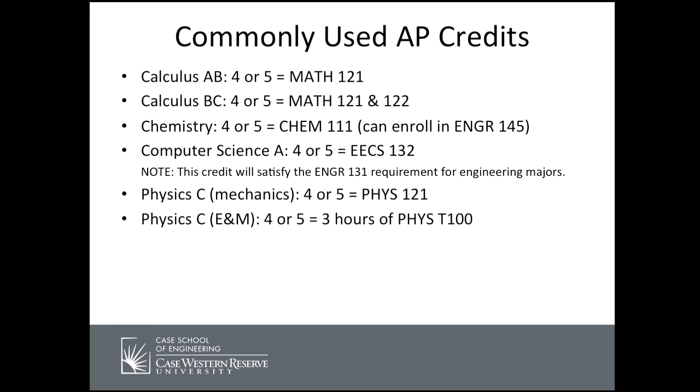Another common area is physics. If you took AP Physics C — Mechanics — and got a score of four or five, you would get credit for Physics 121, our mechanics physics course. For AP Physics C Electricity and Magnetism with a score of four or five, you do not get out of the corresponding Physics 122 Electricity and Magnetism course, but you do get credit for three hours of Physics, which would show on your transcript. You'd want to talk to your advisor about how it's best used.